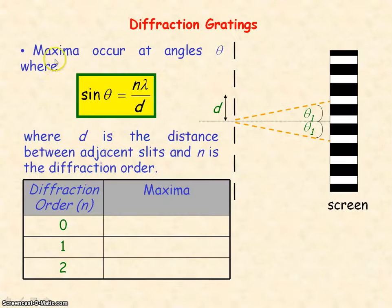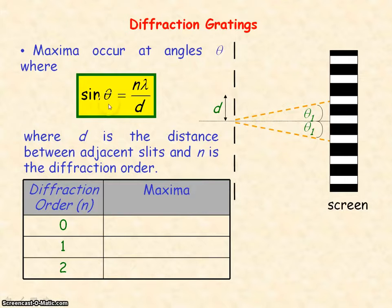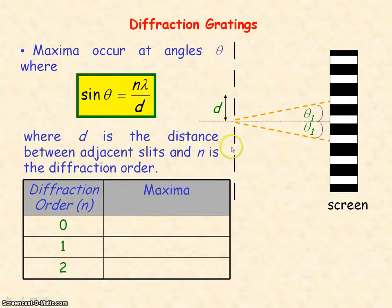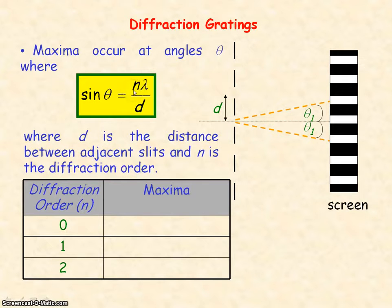The maxima, or bright fringes, occur at angles theta relative to the central maximum, where sine theta is equal to n lambda divided by distance d. d is the distance between adjacent slits, lambda is the wavelength of light passing through the slit, and n is known as the diffraction order — it is the nth maximum.